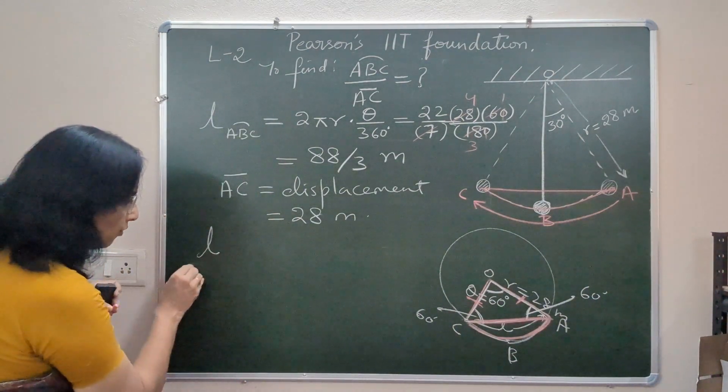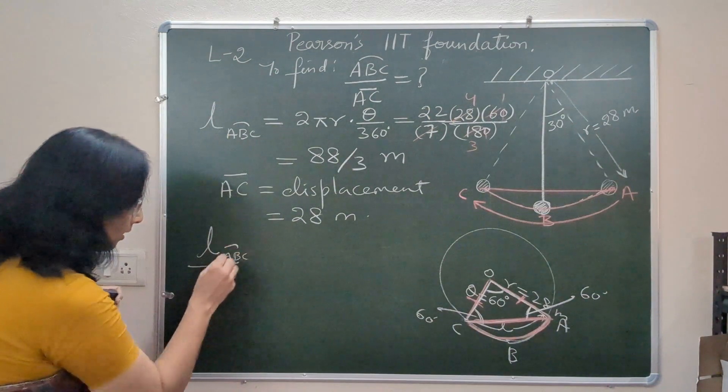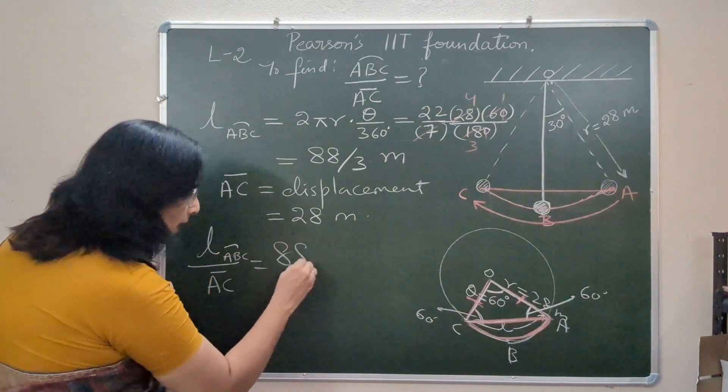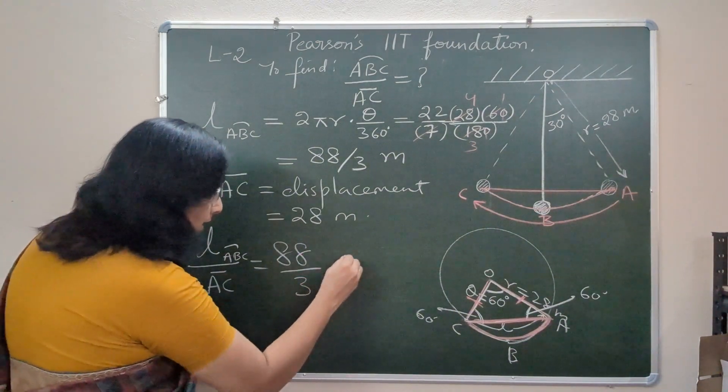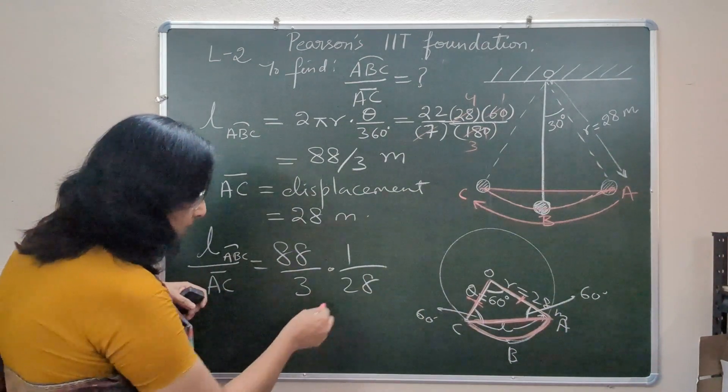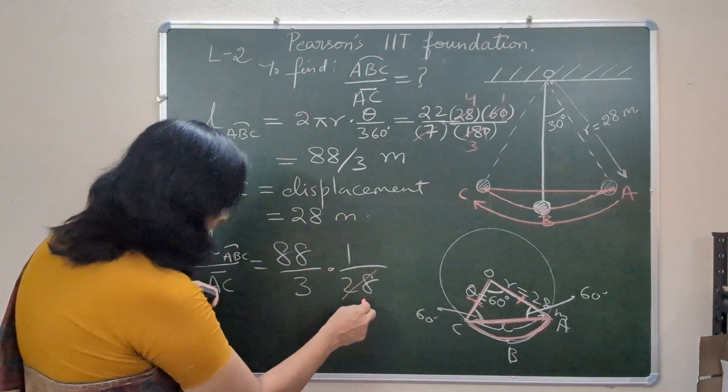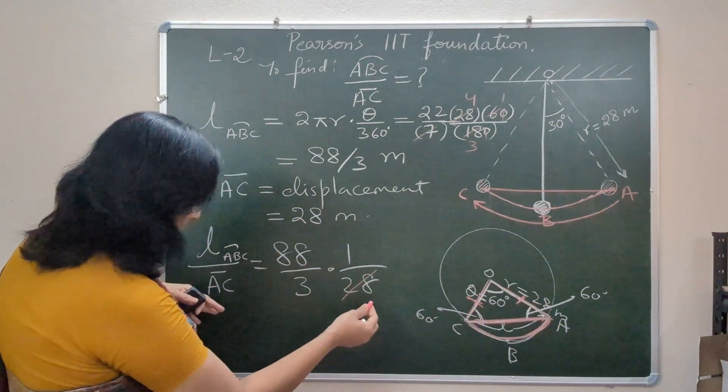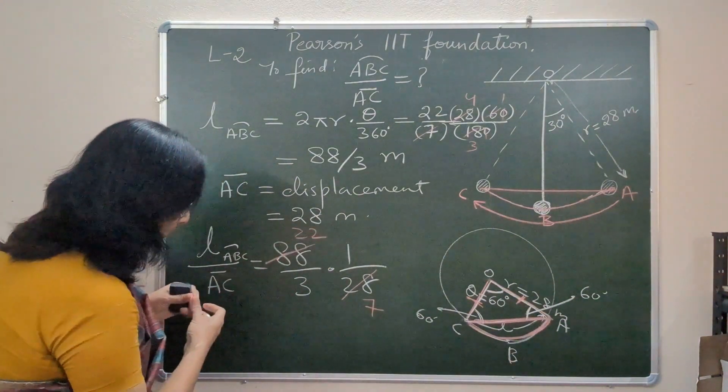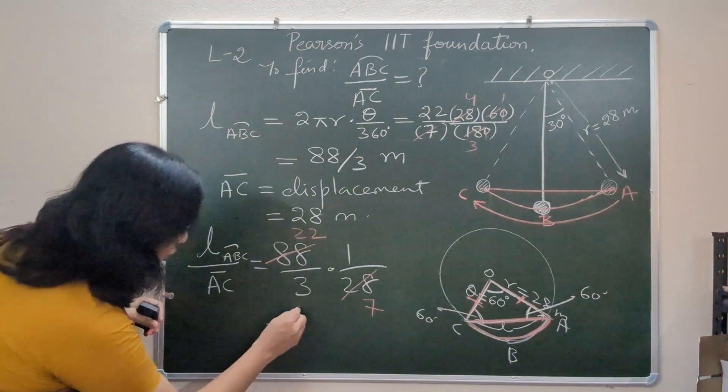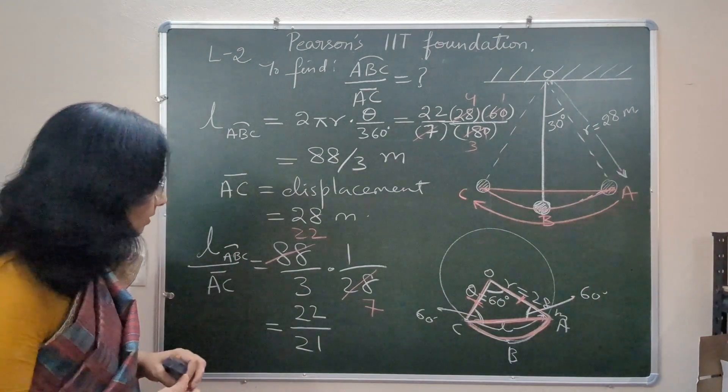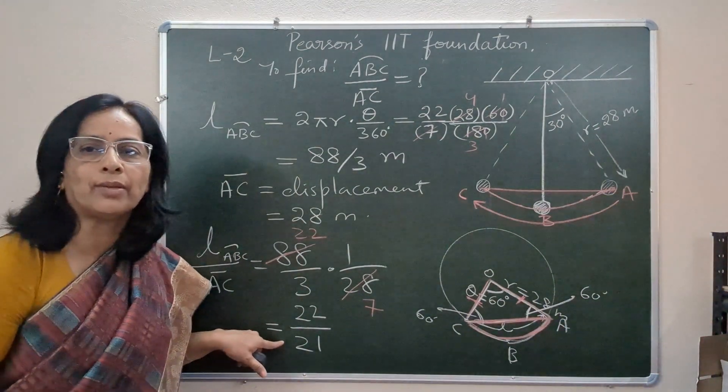So what is the ratio? Ratio is length of arc ABC to displacement. This is 88 by 3 divided by 28. We can do some cancellation. So this is 4 into 7 is 28, 4 into 22 is 88. And ultimately the ratio is 22 by 21. So the answer is 22 is to 21.